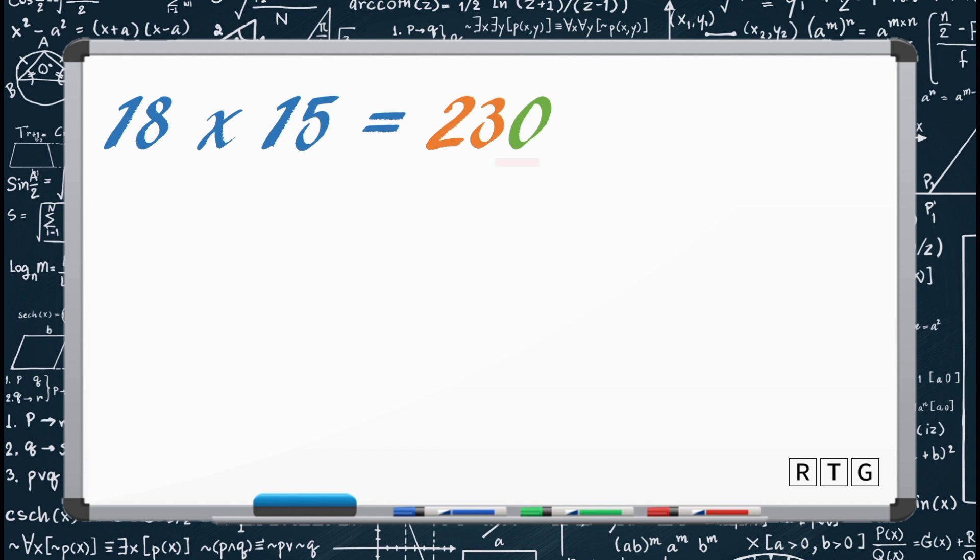Third step, let us also multiply the unit digits of our two numbers. The unit digit of 18 is 8, while the unit digit of 15 is 5. We need to multiply these two. 8 times 5 equals 40.